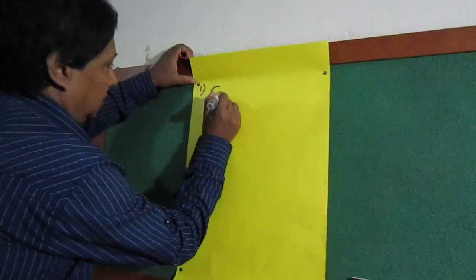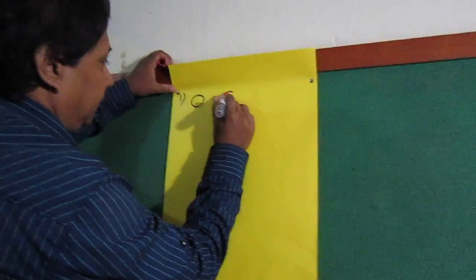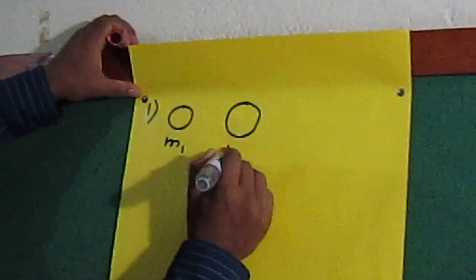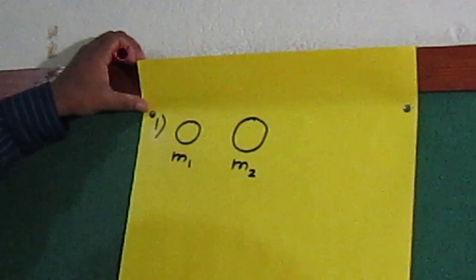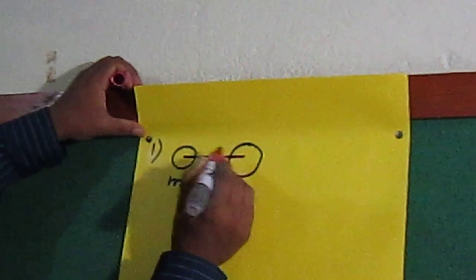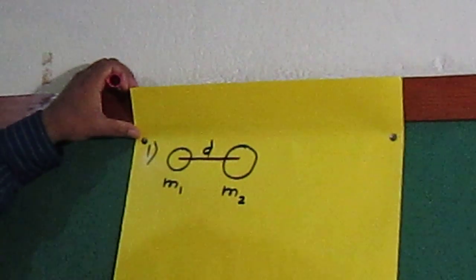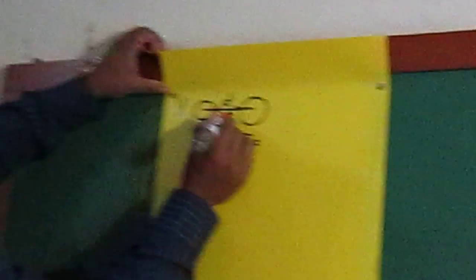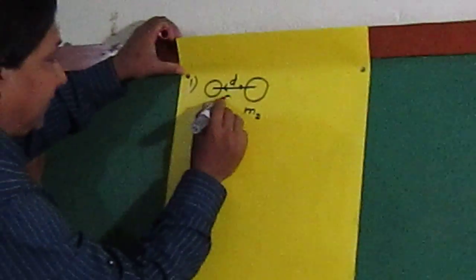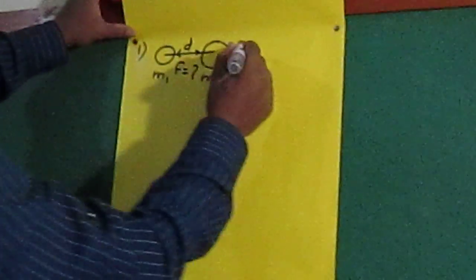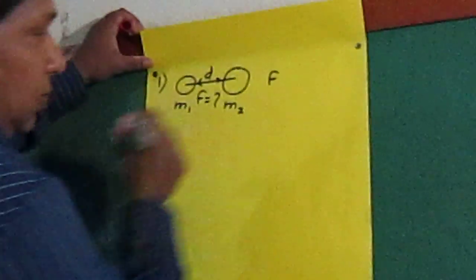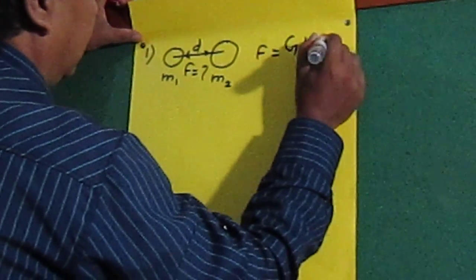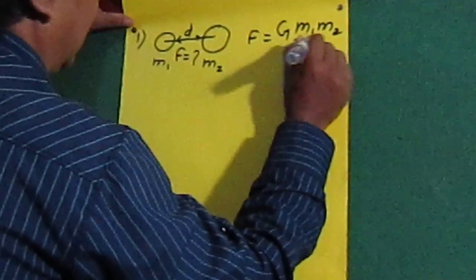If there are two bodies having mass M1 and M2, and they are separated by a distance d, and if you are told to calculate the gravitational force between them — the attraction force F — then you can use this equation: F equals G times M1 times M2 divided by d squared.